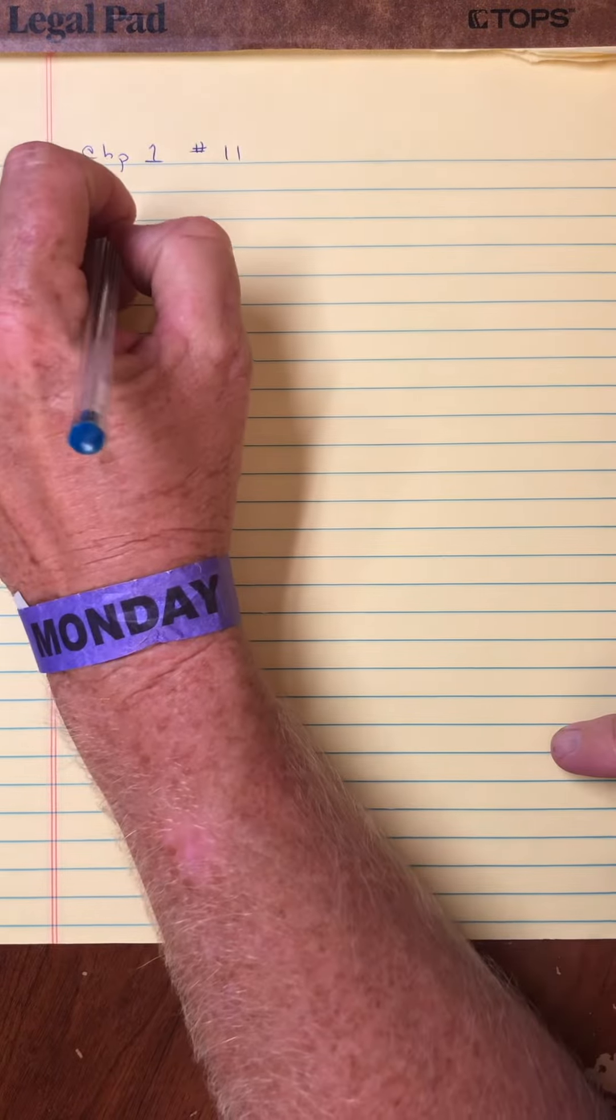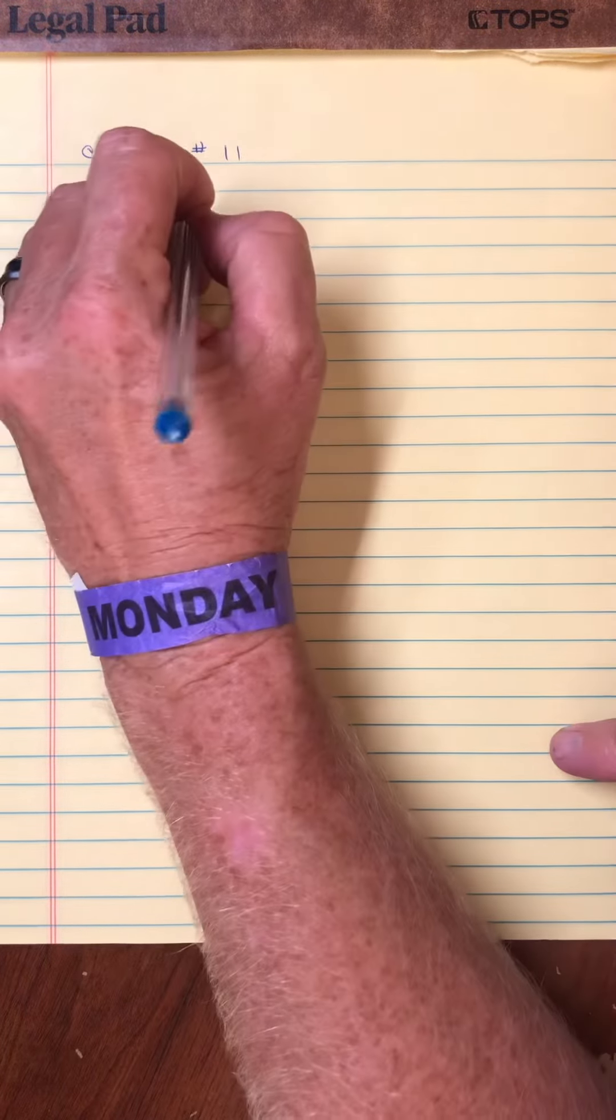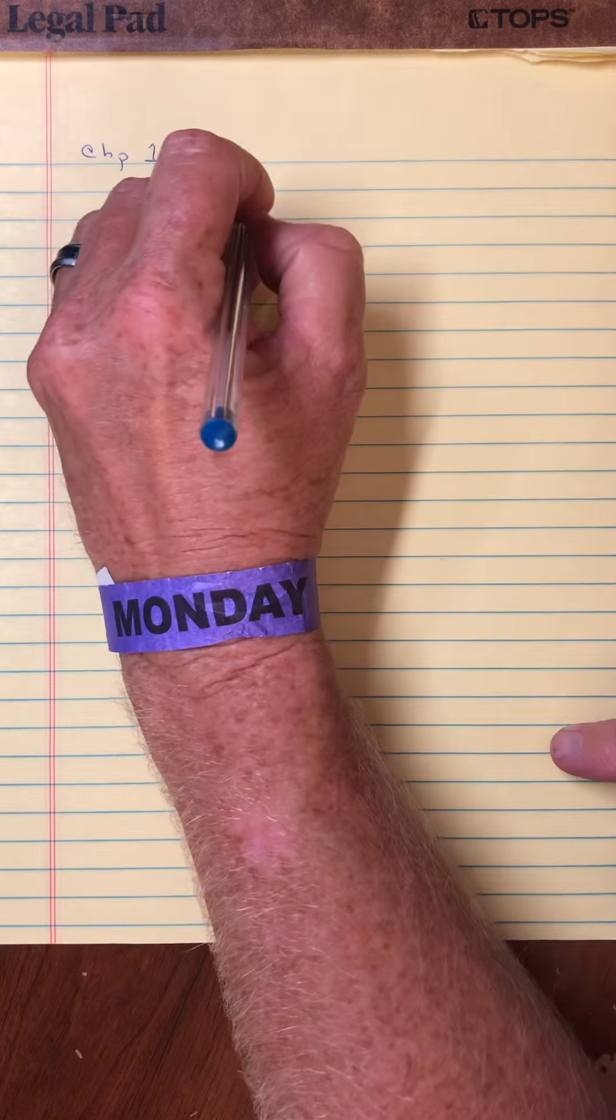And so number 11 says, suppose that your bathroom scale reads a mass of 65 kilograms, but it has an accuracy of plus or minus 3%.